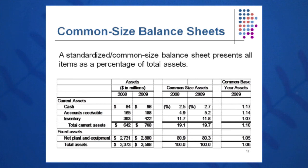We can also look at a common base year. We can take 2008 as a common base year and divide the 2009 value by the 2008 value and get 1.17 for cash. This means cash in 2009 is 17 percent higher than it was the prior year.